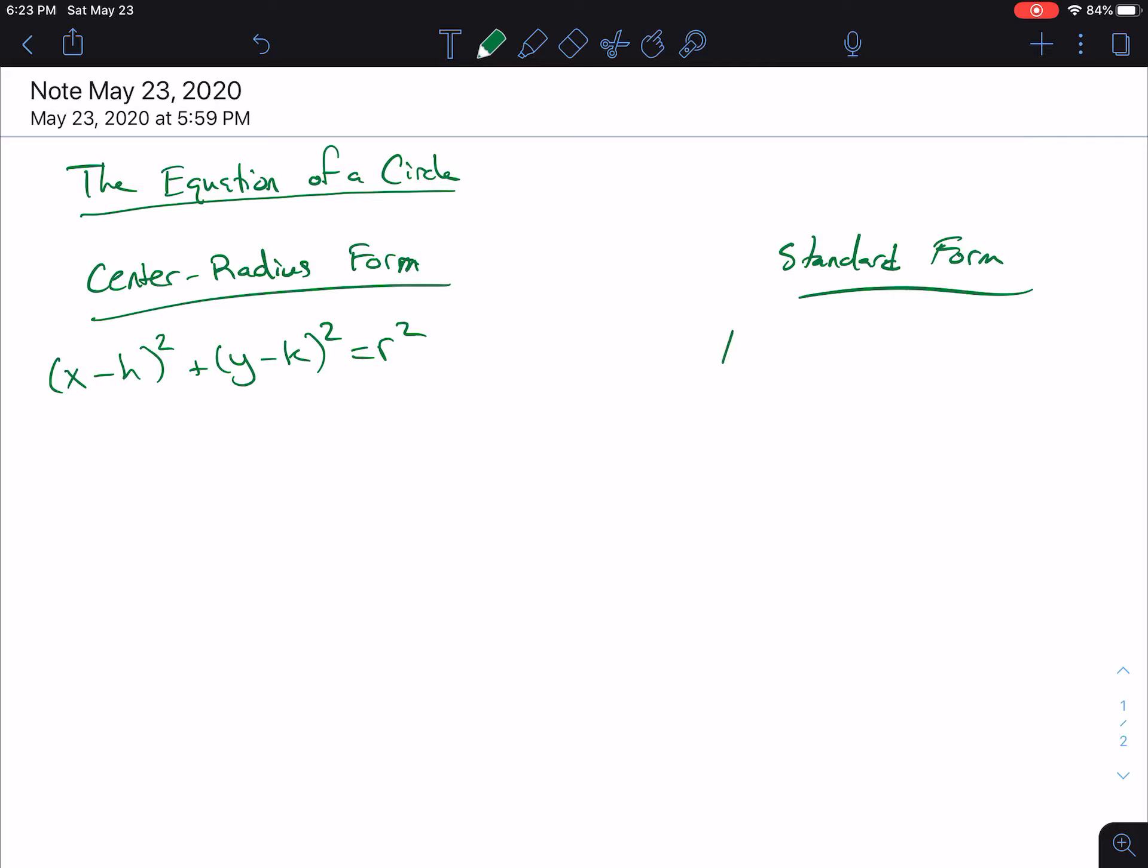And then for standard form, we actually have Ax² + By² + Cx + Dy + E = 0. So what happens here is we're going to leave standard form for a minute, and we probably won't even get to standard form in this lesson today. I really just want to focus on center-radius form.